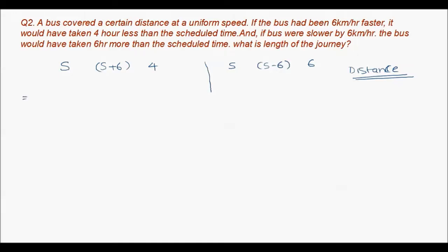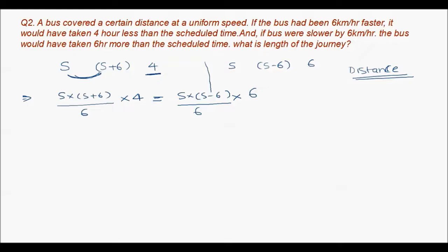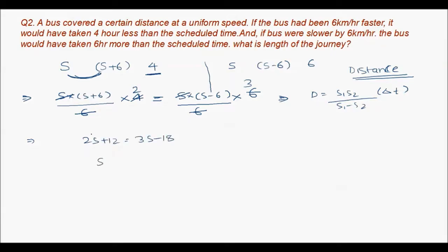We can use the same formula from question 1. Setting distance equal in both cases: s(s+6)/(6) × 4 = s(s−6)/(6) × 6. The 6s cancel, giving 4(s+6) = 6(s−6), so 4s + 24 = 6s − 36, meaning 2s = 60, so s = 30 km/h. The speed of the bus is 30 km/h.